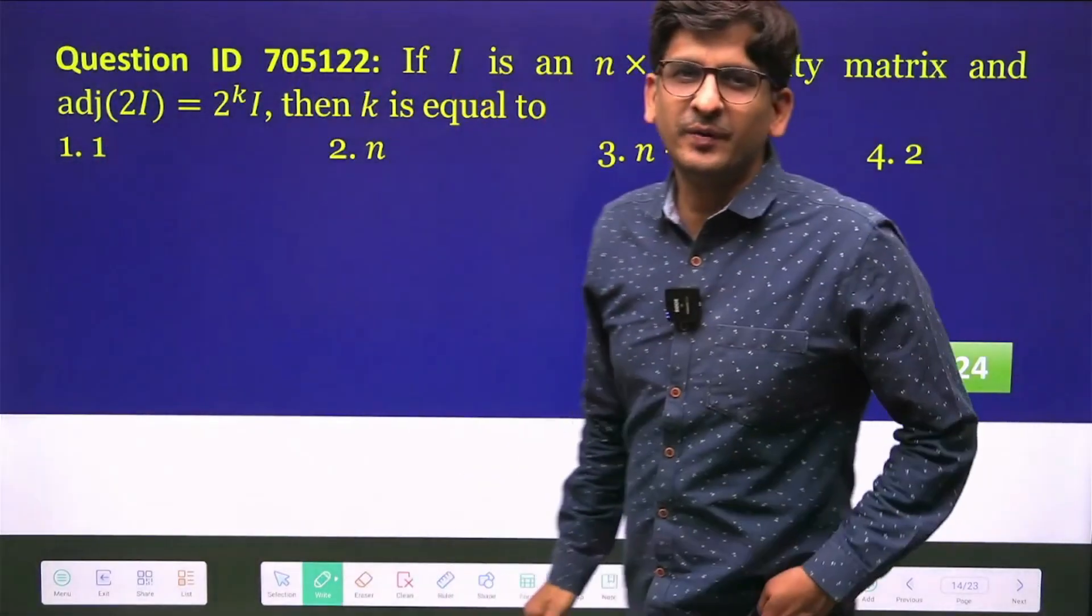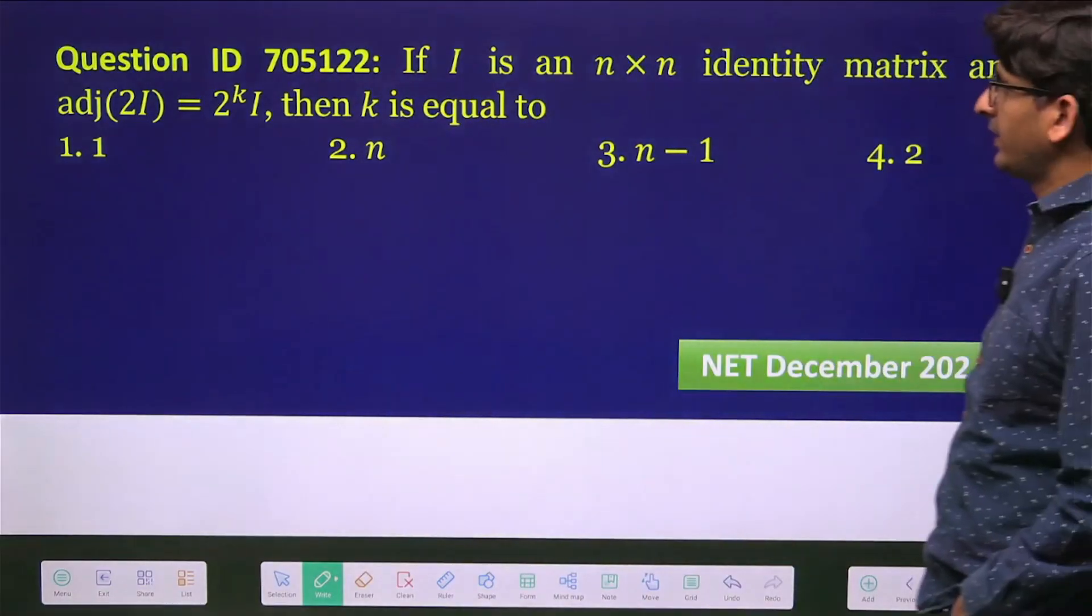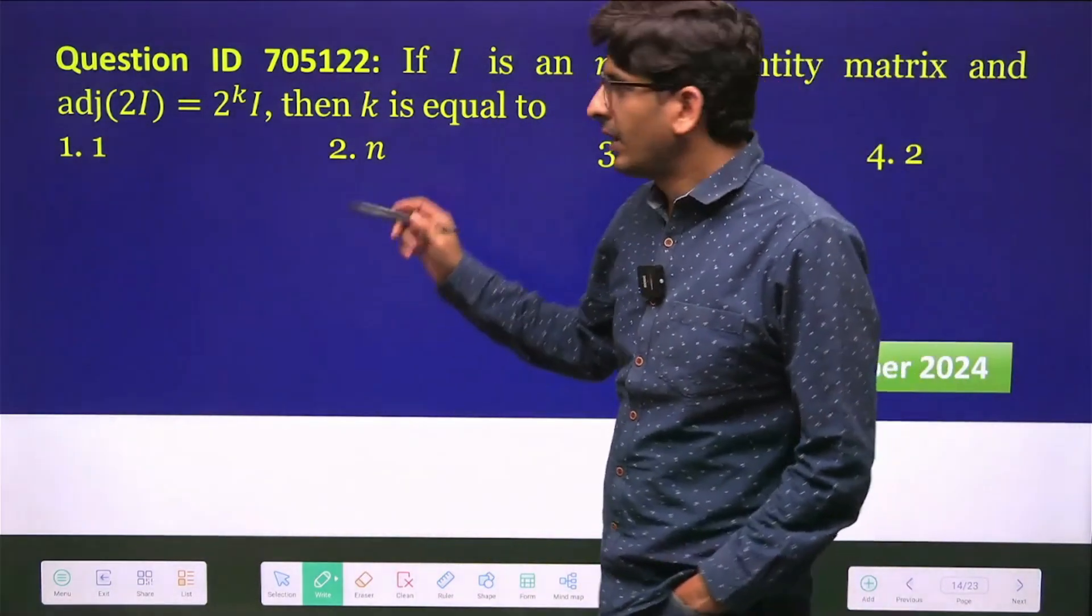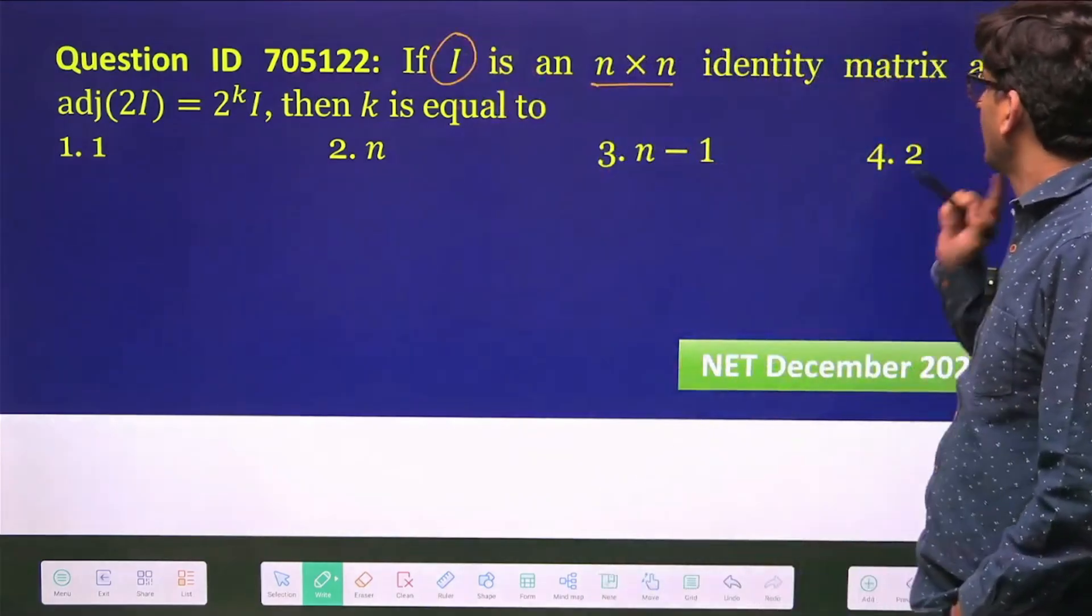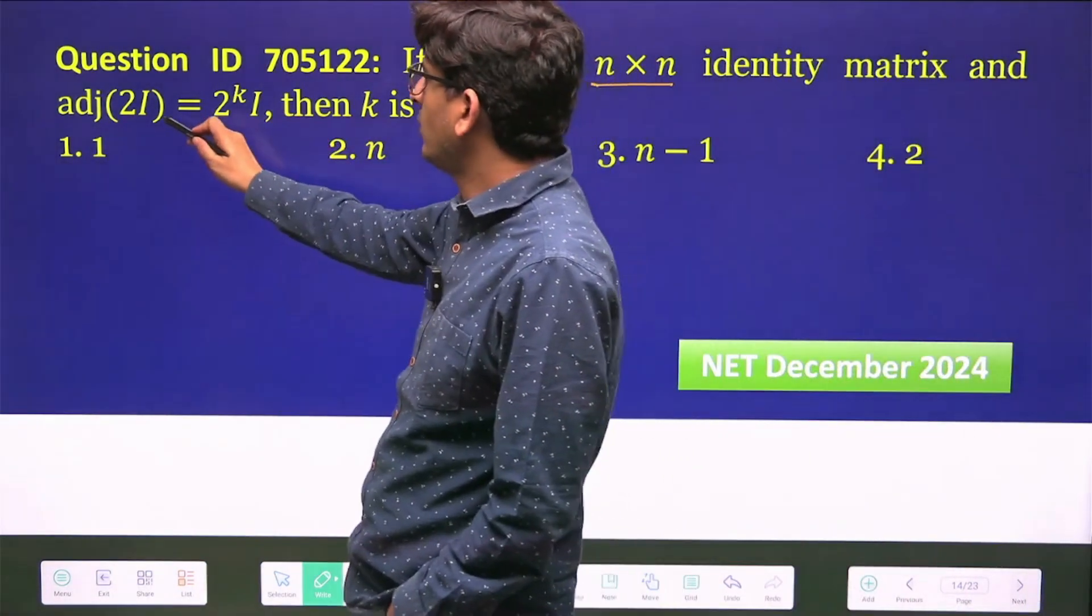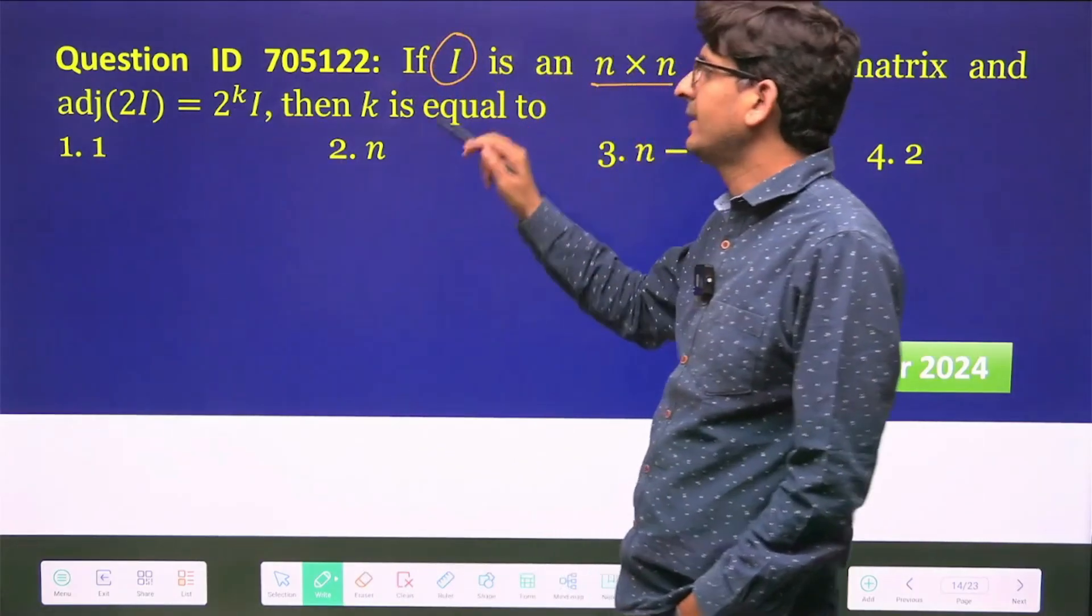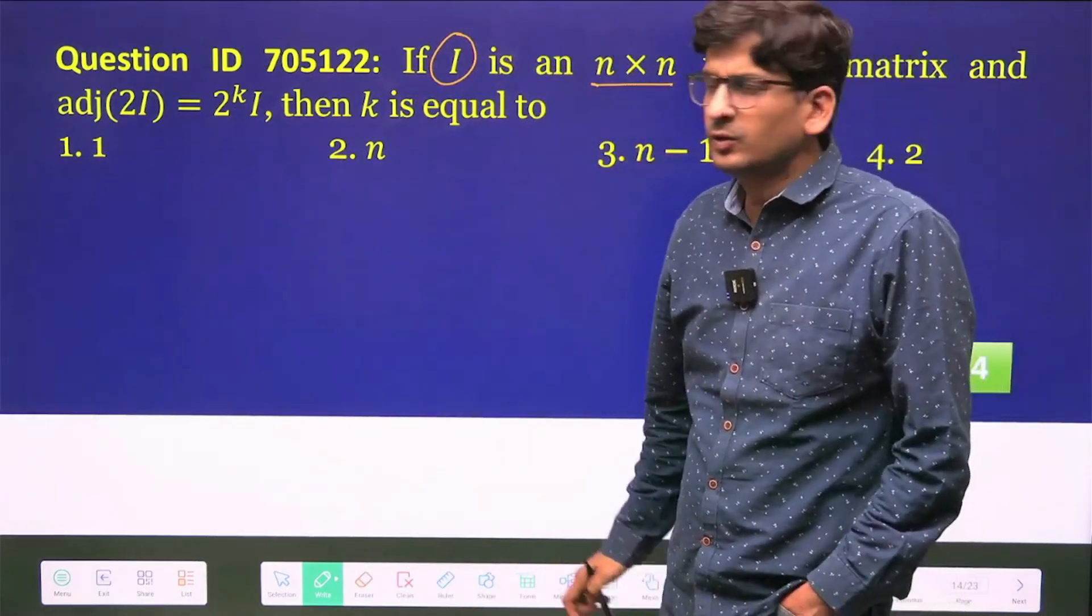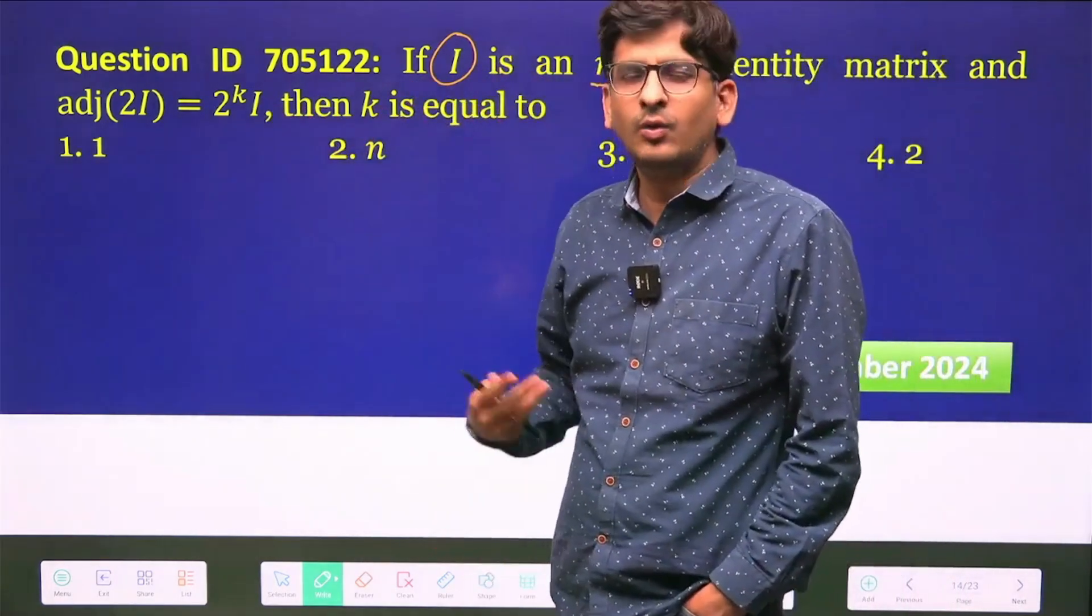Hello students, welcome to Pravega Education. This is a question from NET December 2024. I is an n×n identity matrix and they have asked about adjoint of 2I is equal to 2^k·I, and what is the value of k? So suppose in general you don't know how to do it.